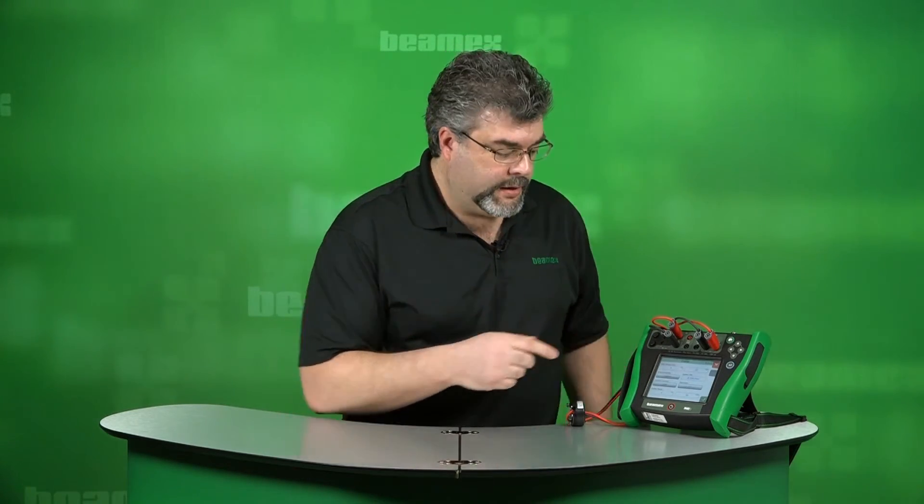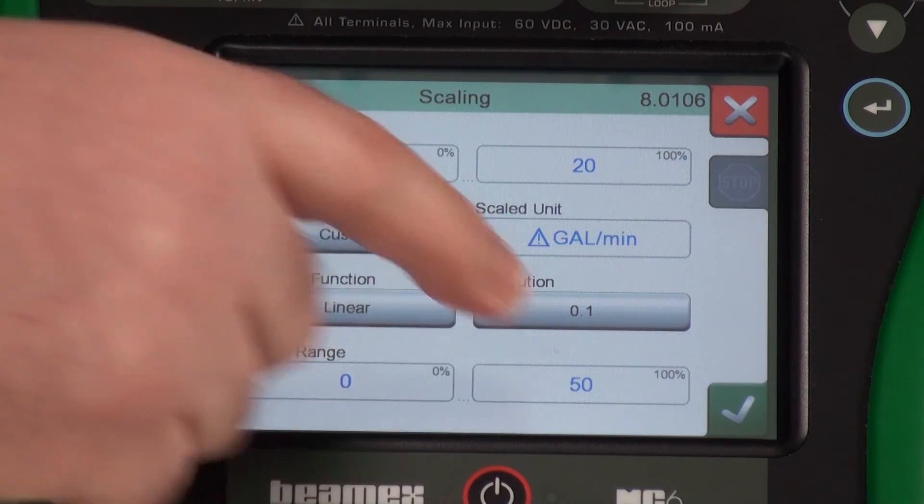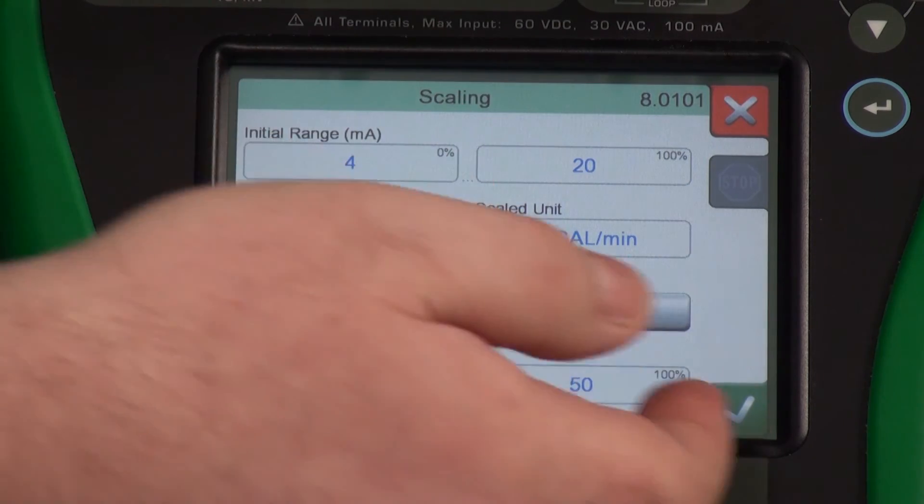Let's do something ridiculous. Let's convert our temperature input to what our DCS might be showing. So we have 0 to 100 input. And let's say that on a display in the control room, 0 to 100 degrees Celsius equals 0 to 50 gallons per minute. 4 to 20 equals 0 to 50 gallons per minute. And we'll just hit check.